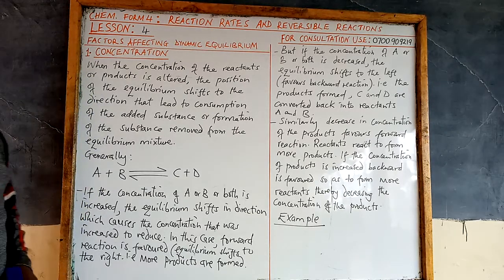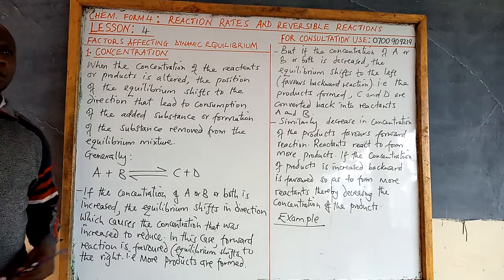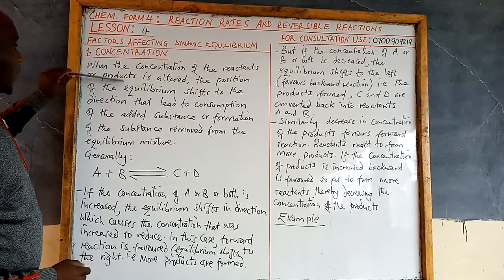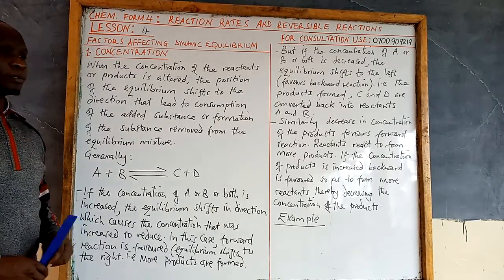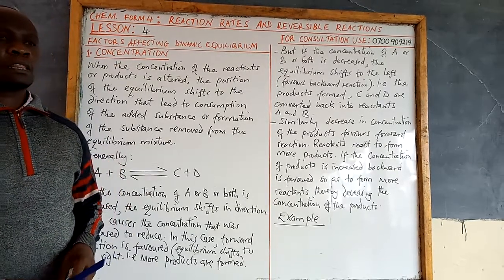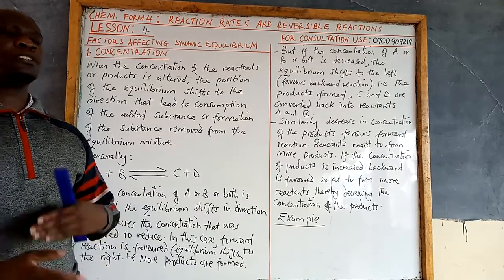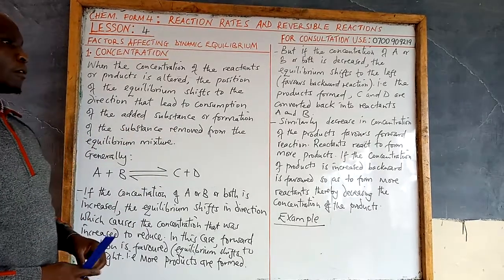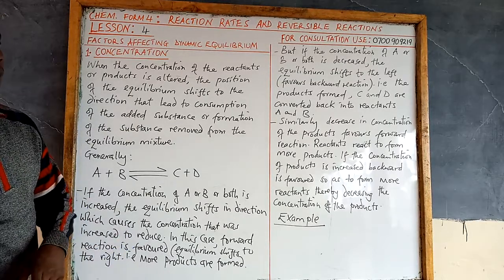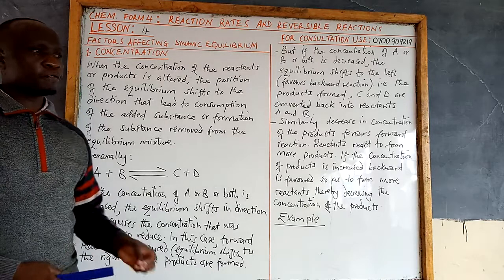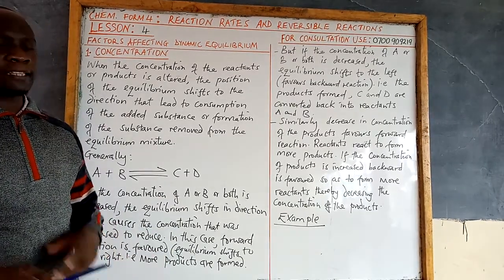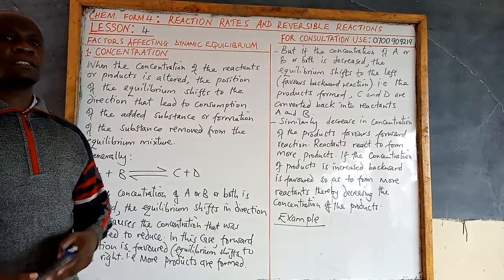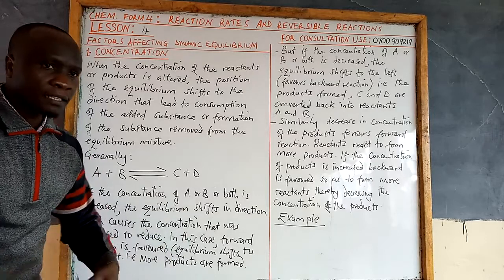The first factor on our list is concentration. How does concentration affect the position of equilibrium? When the concentration of the reactants or the products is altered or changed, the equilibrium always shifts in such a way as to cancel that change, by either effecting consumption of what was added or production of that which was removed.